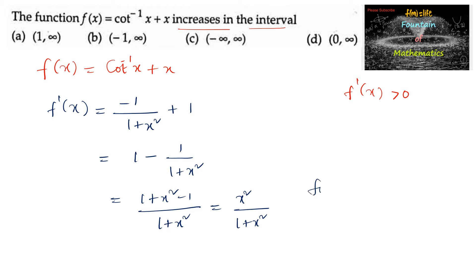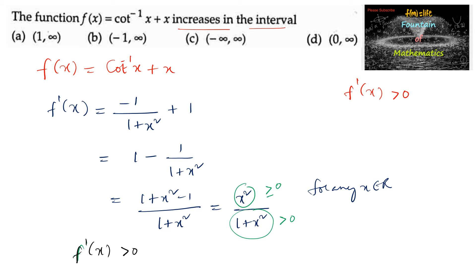For any real number, for any x belonging to ℝ, the numerator x² is greater than or equal to 0, and 1 + x² is also positive. So we can say f'(x) ≥ 0 for any x belonging to ℝ.